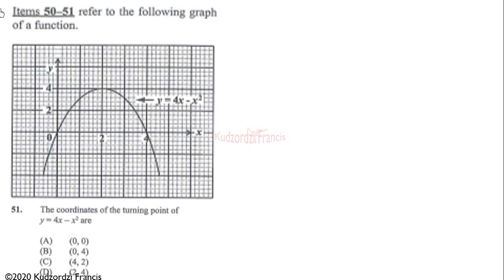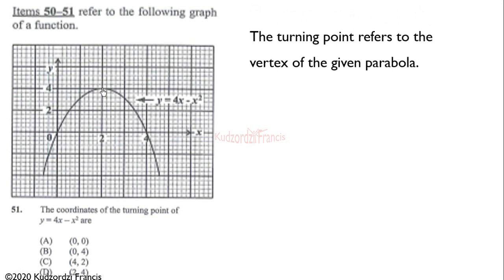Continuing from the previous video, we have question 51: the coordinates of the turning point of y = 4x minus x squared. The turning point is where the graph changes from increasing to decreasing — that is the maximum point. The vertex of this parabola is at x = 2, and tracing across gives y = 4, so the turning point is (2, 4).